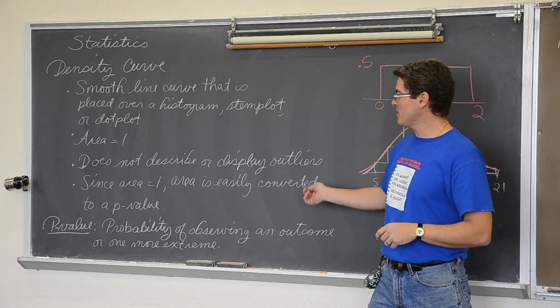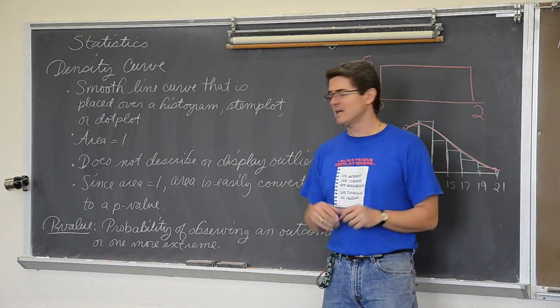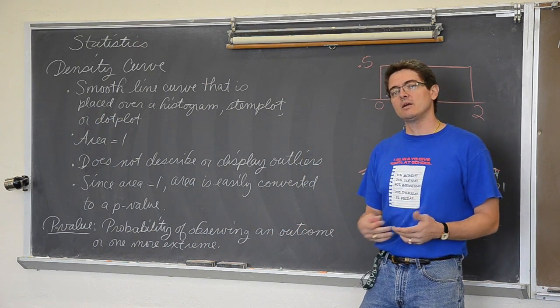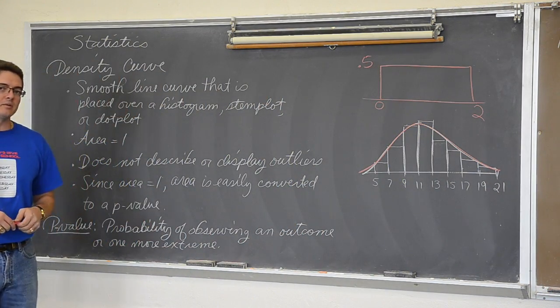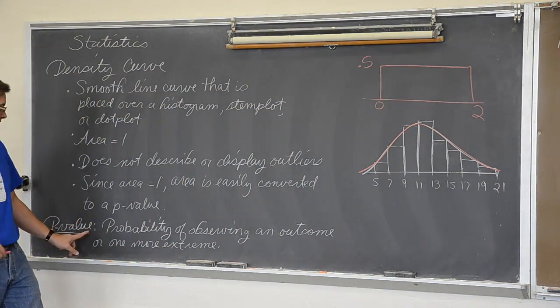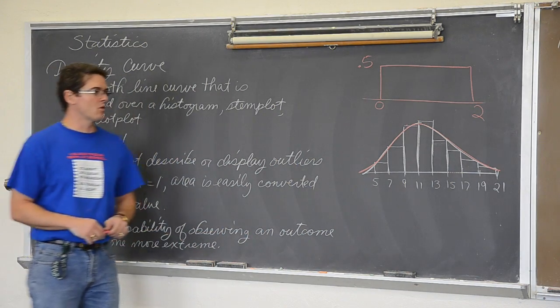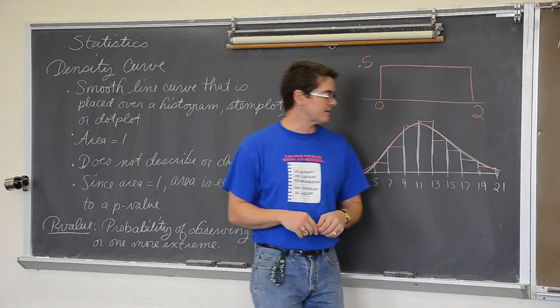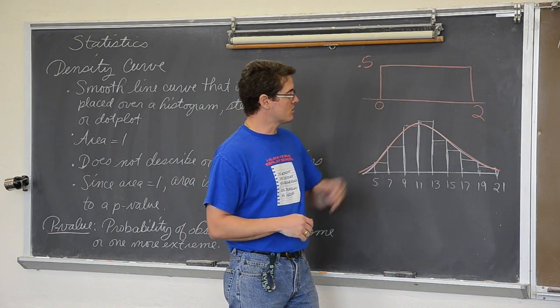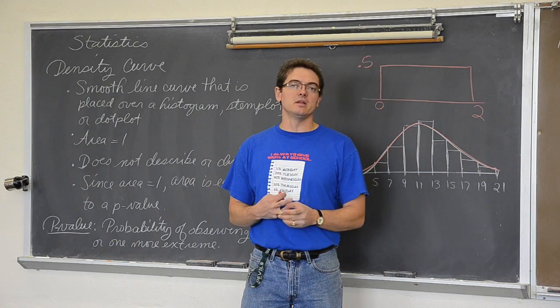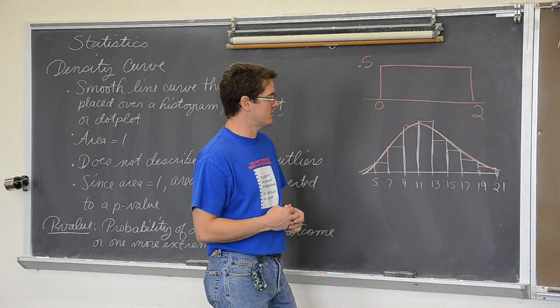Since the area is equal to one, the area is easily converted into a p-value. What the heck is that? A p-value is a probability of observing a certain outcome or one that is more extreme. We will talk more about that later. The areas in that bell curve are going to be converted into a probability and we will say some conclusions.